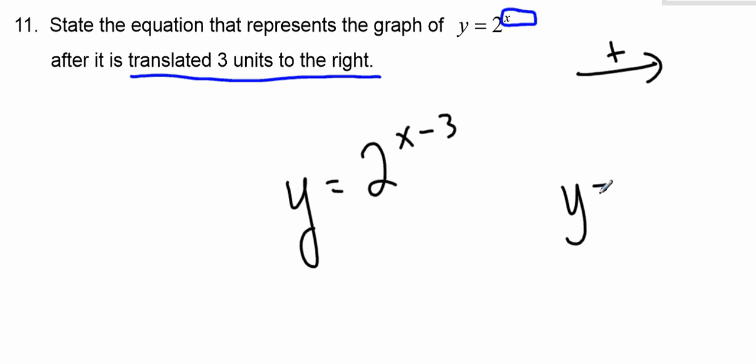If I had done, for example, this, this would be 3 units down, this would be 3 units up. This is 3 units to the right.